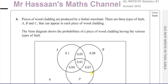Okay, welcome back to Mr. Hassan's Maths Channel. I'm now going to be going through question number four from the October 2018 Statistics S1 paper. This is an international A-level paper, and this question is on probability and Venn diagrams.